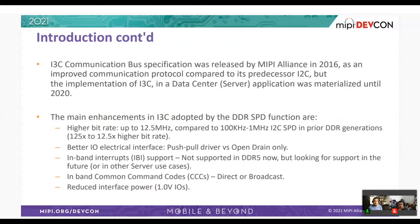Depending on the implementation, we can get between 12.5 to 125 times higher bit rate. The better agile electrical interface with a push-pull driver versus an open drain only buffer is much better for this type of implementation. There is support for inbound interrupts (IBIs), which is not currently used by DDR5 SPD but being considered for the future. Additionally, support for CCCs direct or broadcast and reduced interface power at one volt IO.